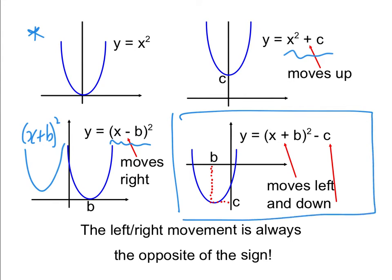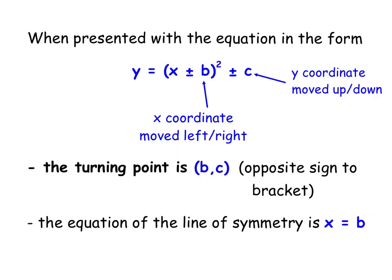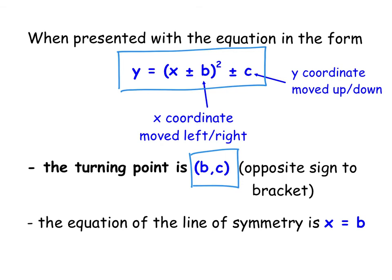The basic quadratic graph moved to the left has a positive in the bracket, and if moved down has a negative number at the end. Whatever these numbers are in your equation, they give you the coordinate of the turning point. When you've completed the square, the B value is your X coordinate and the number on the end is your Y coordinate. But remember, B is technically the opposite sign of what's in the bracket — if it says plus 2 in the bracket, that becomes minus 2 for the first half of your coordinate.